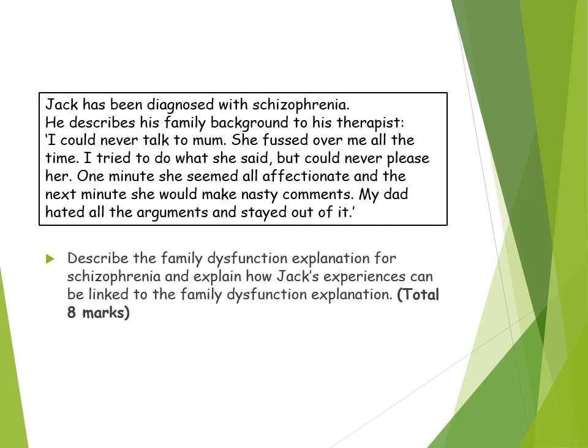For an AO1 and AO2 question, I would personally do my outline first. I would outline what double bind theory is — the idea that family dysfunction is caused by abnormal family communication styles, resulting in the development of schizophrenia. Double bind is when a child receives contradictory verbal and non-verbal communication messages, meaning they develop an incoherent representation of reality. I would then apply it: this can be seen in the scenario where Jack says his mother's behaviour changes from being affectionate — 'one minute she seemed all affectionate and the next she would make nasty comments' — meaning Jack wouldn't know what she wanted, becoming confused and losing touch with reality.